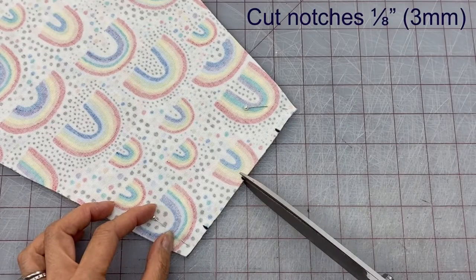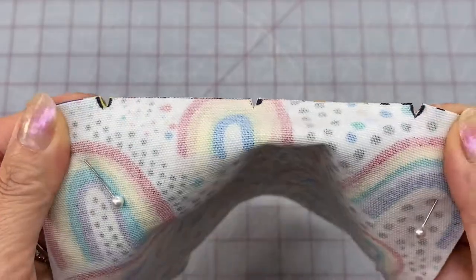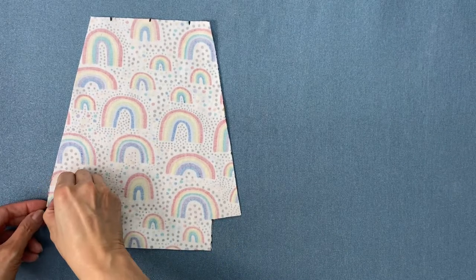For your notches at the top snip your fabric about an eighth of an inch. Remove your pins and go over to the ironing board.